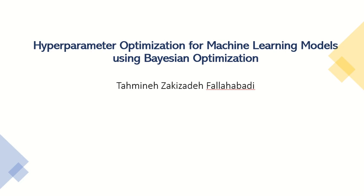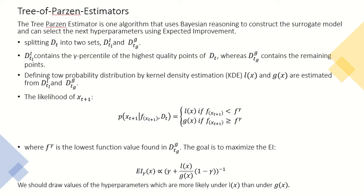This video is also about hyperparameter optimization using another method called Tree-of-Parzen Estimators. This method also uses Bayesian optimization to build the surrogate model, and as an acquisition function, the expected improvement is used in this method.